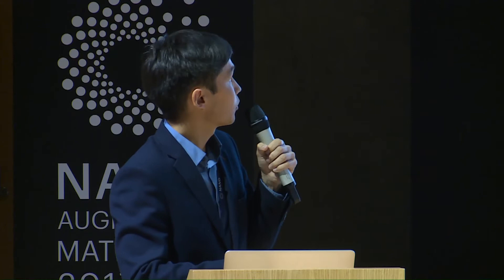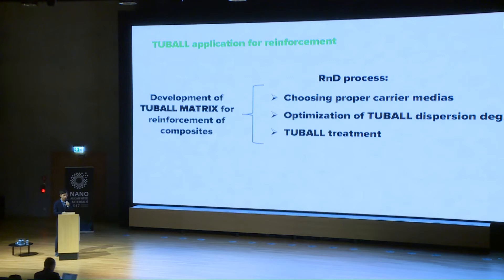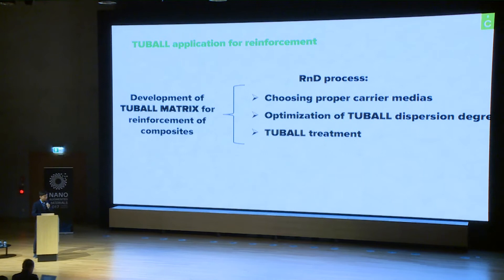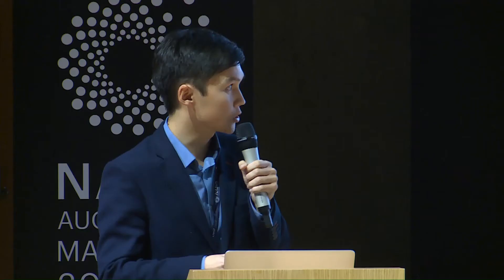Talking about reinforcement — this is our next goal, which we are pursuing now. We want to develop the product in the form of a Tubal Matrix especially for reinforcement of composites. This process is not easy because there are many parameters to consider. The R&D process includes first choosing a proper carrier material for the matrix, which should not reduce mechanical properties itself. We also optimize the dispersion degree of Tubal and explore the possibility of Tubal treatment or functionalization. This research is ongoing.